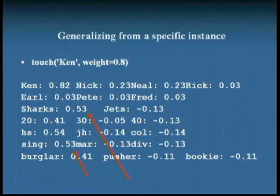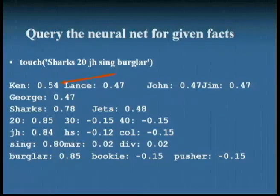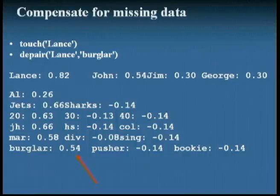Query the neural net for a given set of facts. Crime scene analysis. Rachel, the chief crime scene investigator. What facts have you ascertained? Well, we know the person is 20. They're a shark. They went to junior high. They're single. And they're a burglar. What's their name? We don't really know. So we query our database. We touch all of those neurons, and we see what lights up. Out of the individuals, the ones that light up the most are kin. Kin is the best match. And then we have several that match to the same degree. So we've narrowed down our list of suspects. You can query your database to see how well they match.